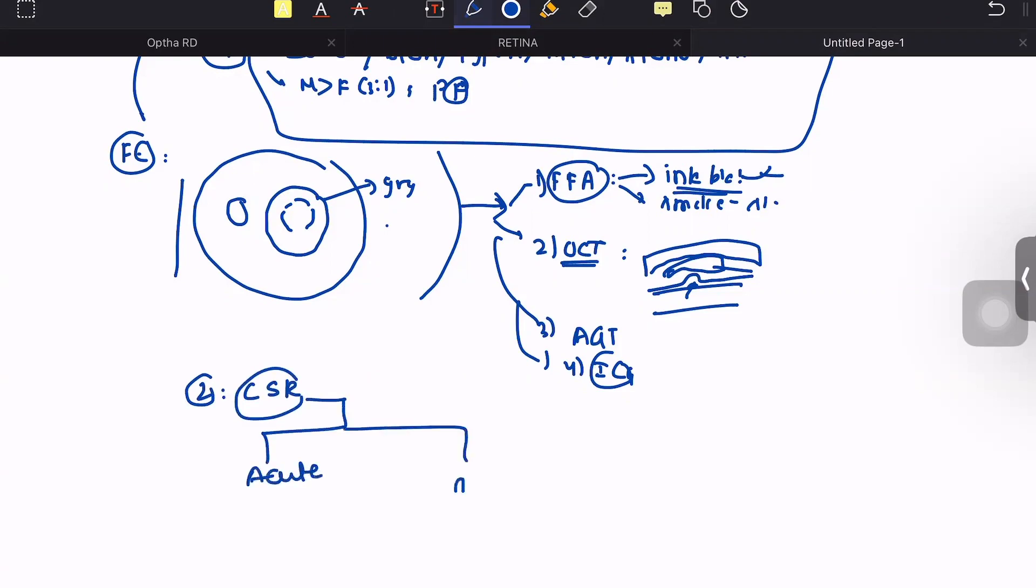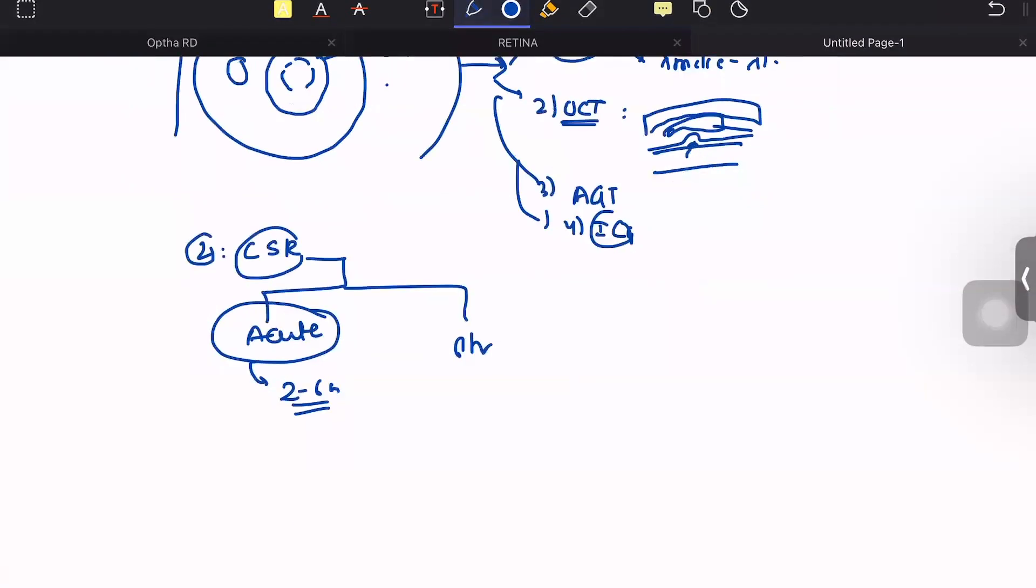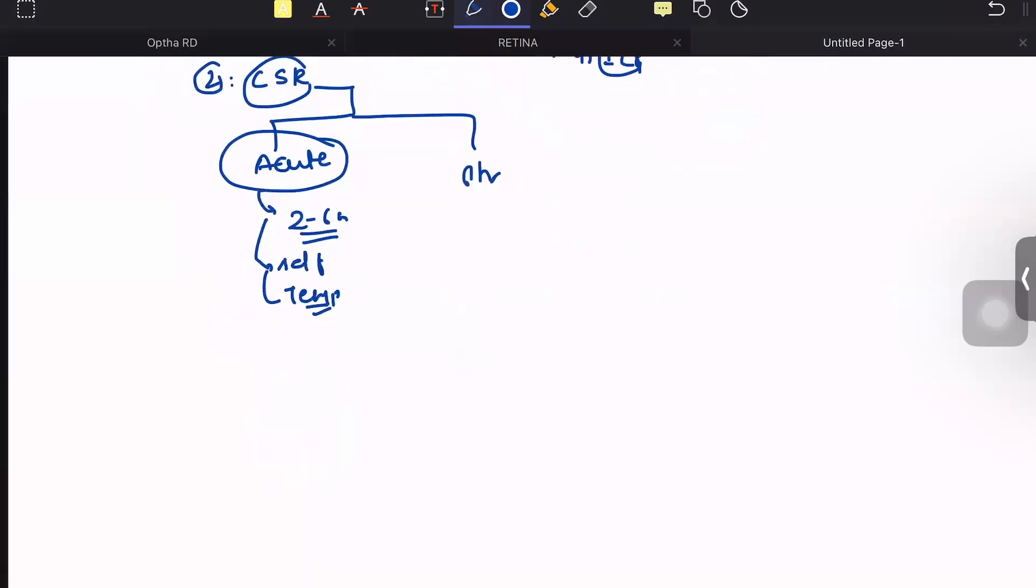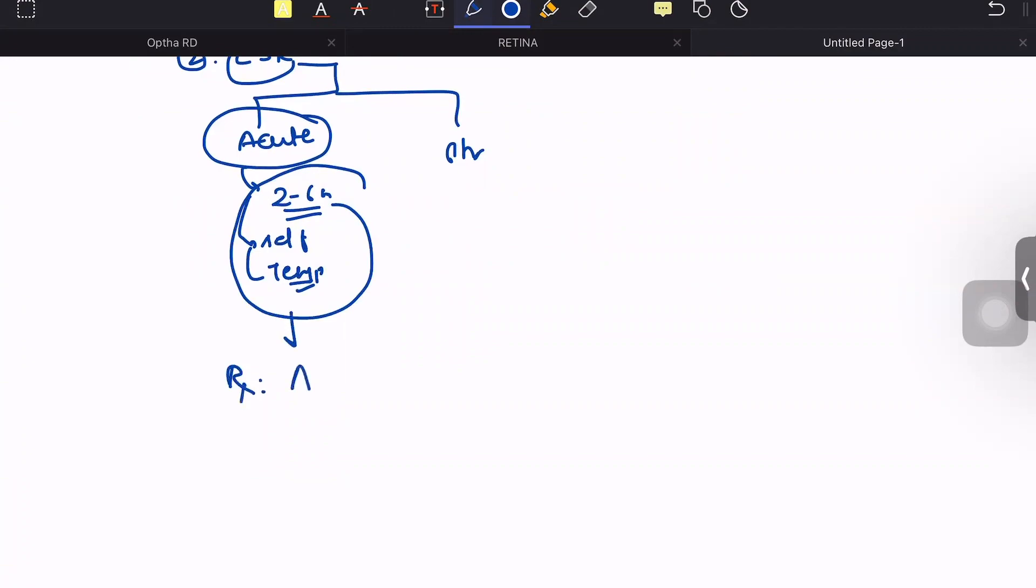There are two varieties of central serous retinopathy: acute and chronic. Acute variety presents within 2 to 6 months and is usually self-limiting and temporary. These patients do not require treatment, but we provide Amsler grid chart to monitor visual prognosis, ask them to avoid risk factors like steroids and stress, control hypertension, and provide spironolactone which has shown benefit in faster resolution of disease.